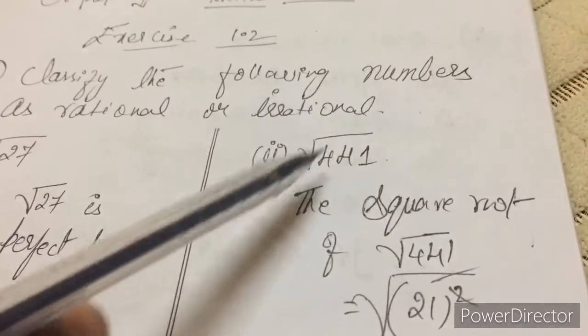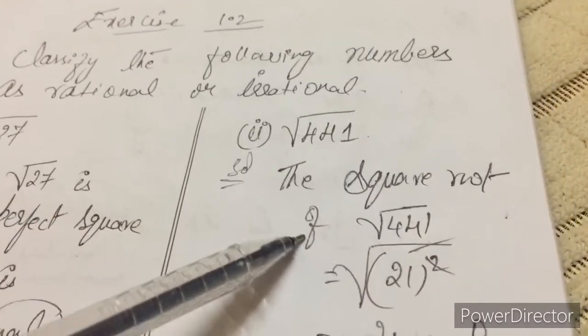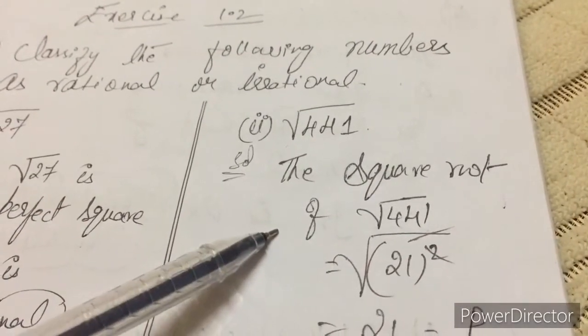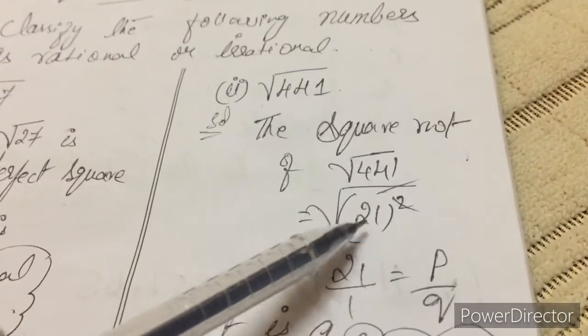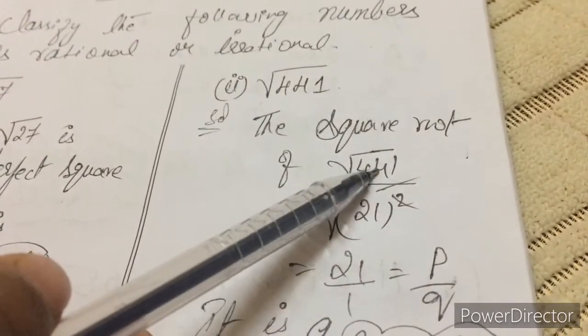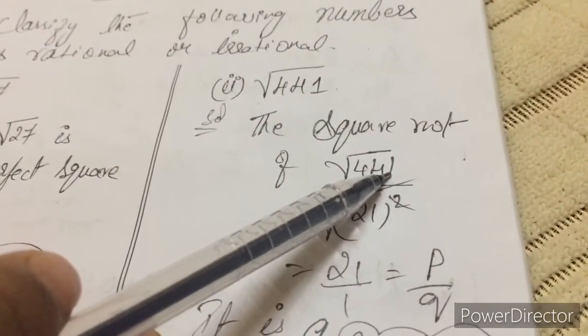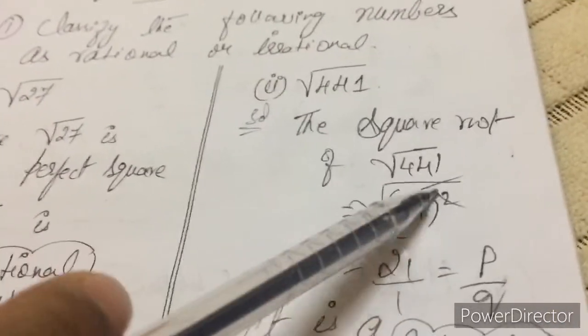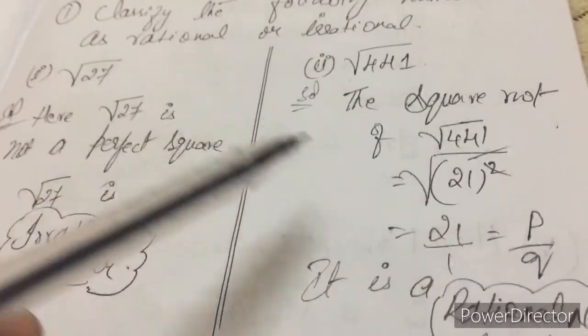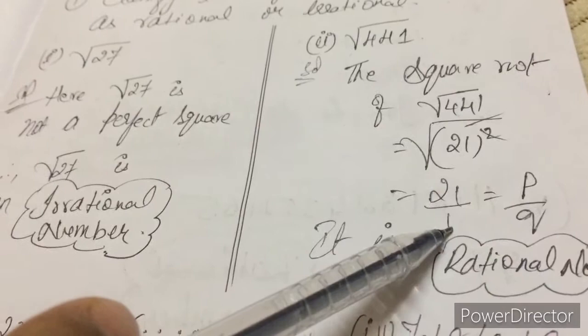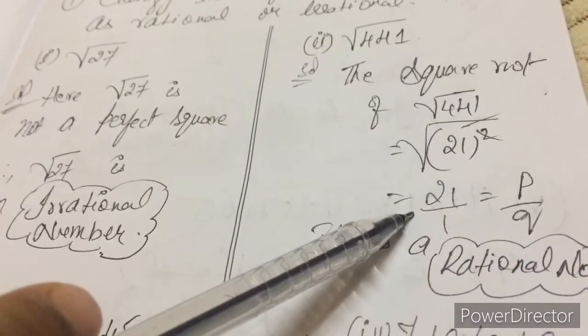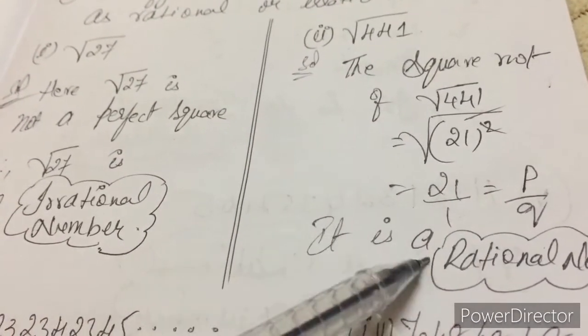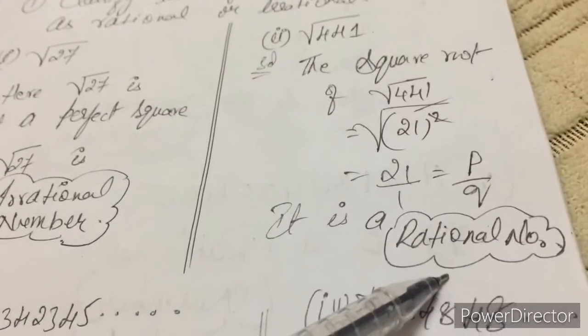Second one, root 441. It is a perfect square student. See, 441 root is 21 whole square. We can write 441 as 21 whole square. This square and root gets cancelled. It is 21 by 1, P by Q form. This is in the form of P by Q. It is a rational number.